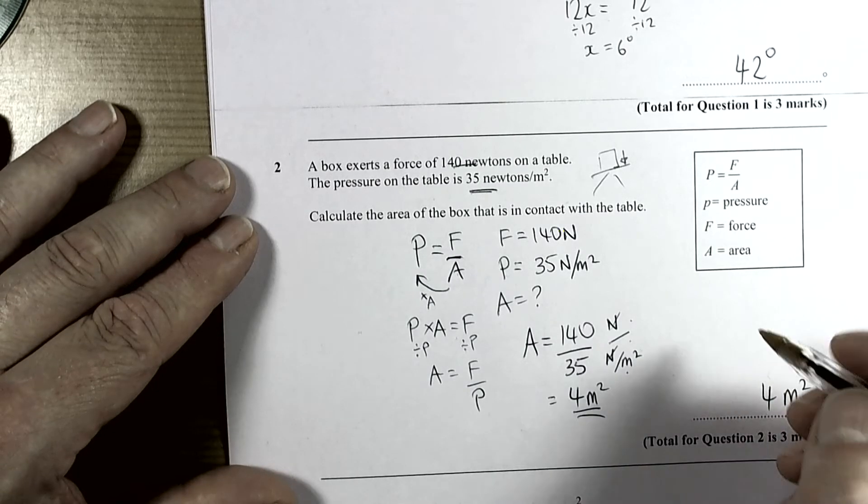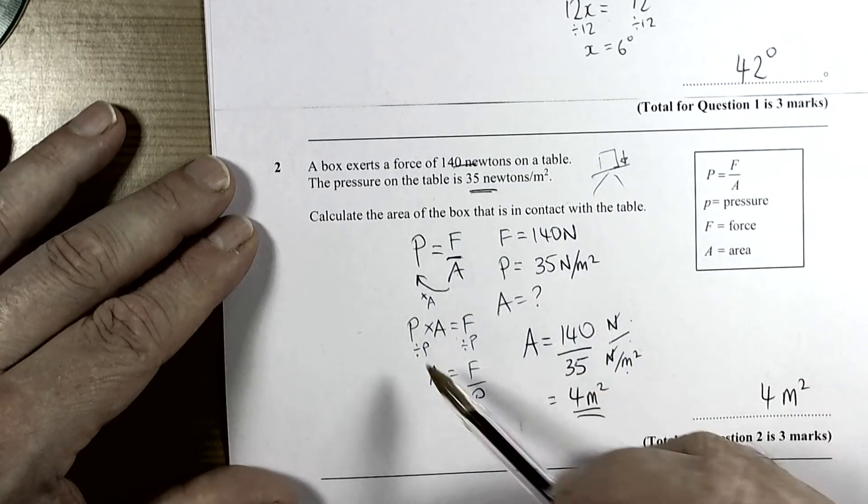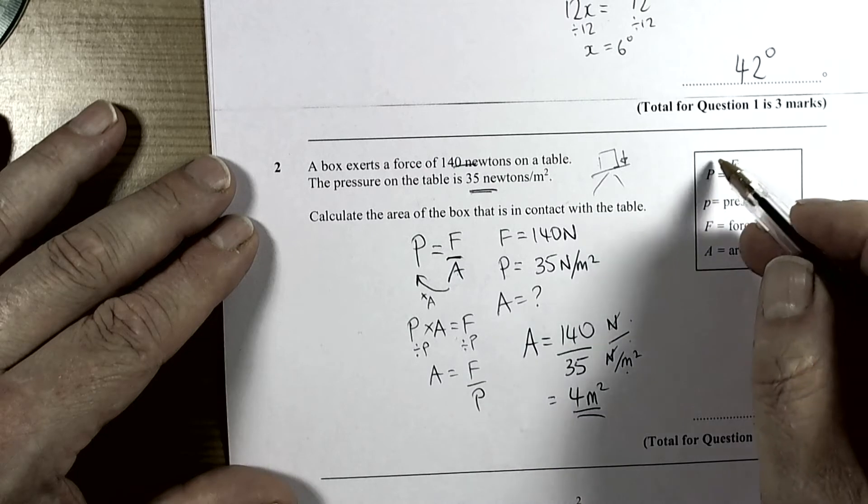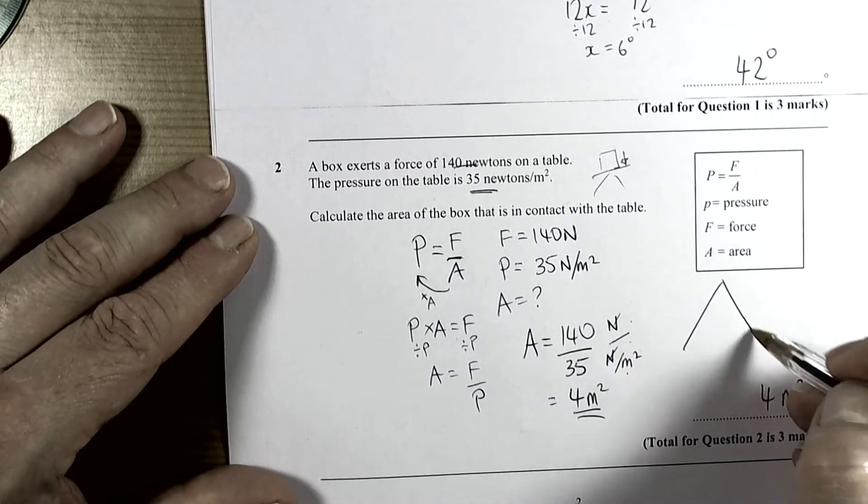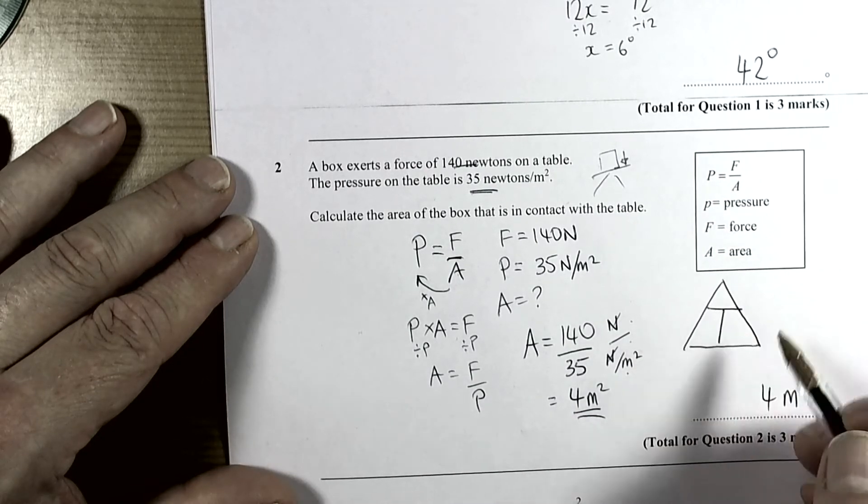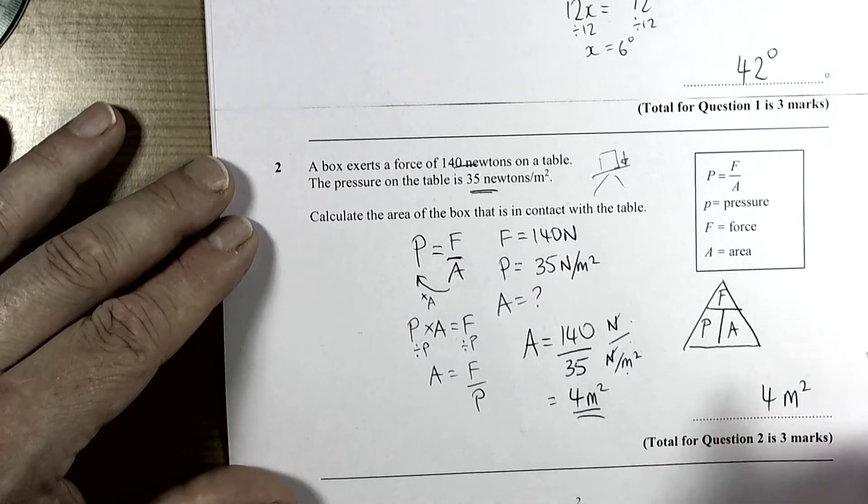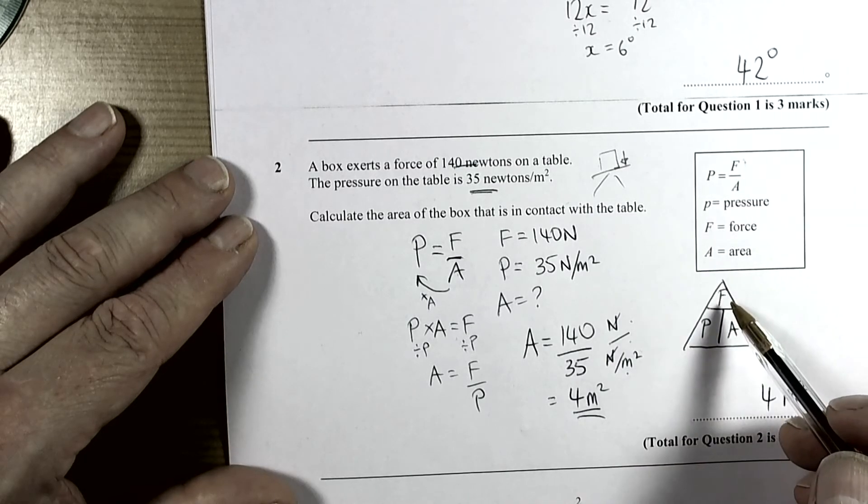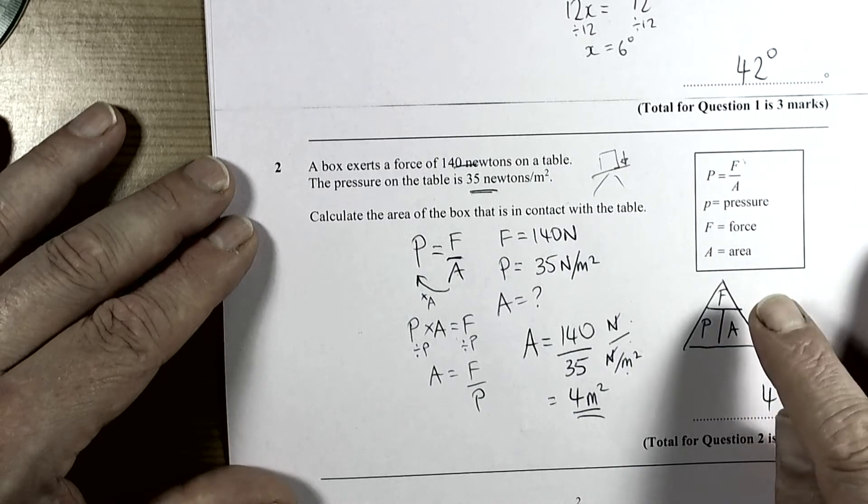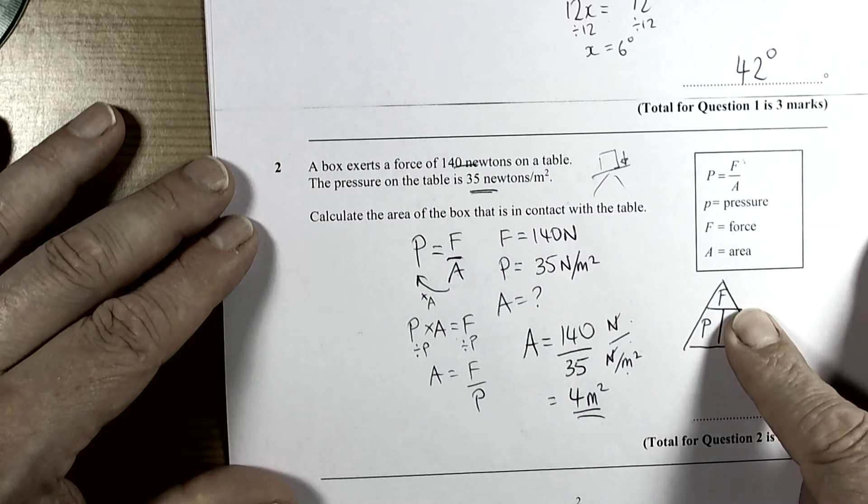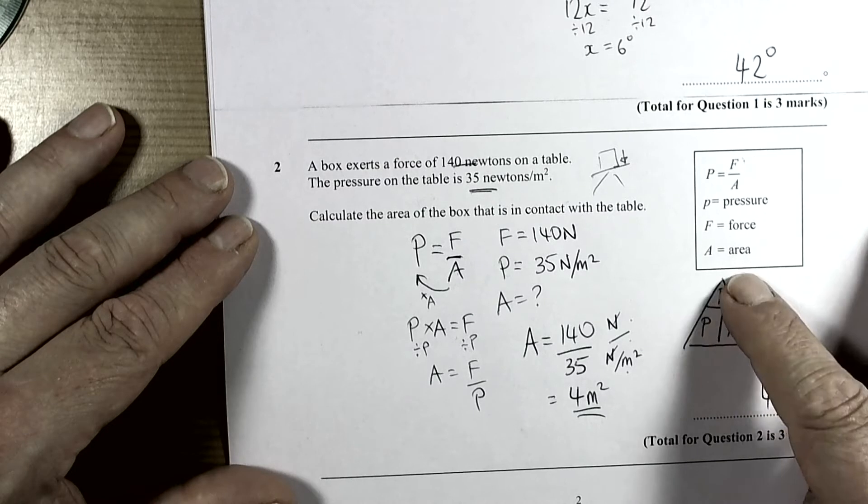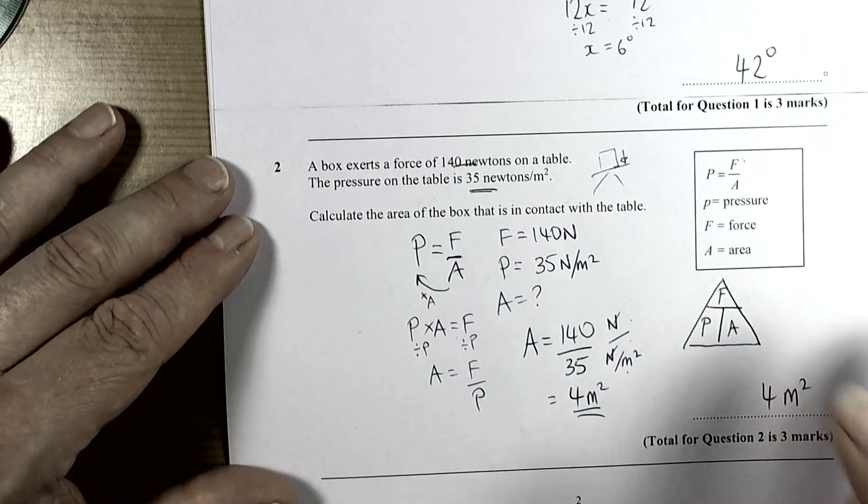If you don't like rearranging with these three-letter formulas, just remember you can use the triangle where the subject goes at the bottom left, and then the two division variables go on top and bottom just like they are in the formula. Because the question wanted the area, we can cover up the area and it's telling us to do the force divided by the pressure. That's another way of doing that kind of question.